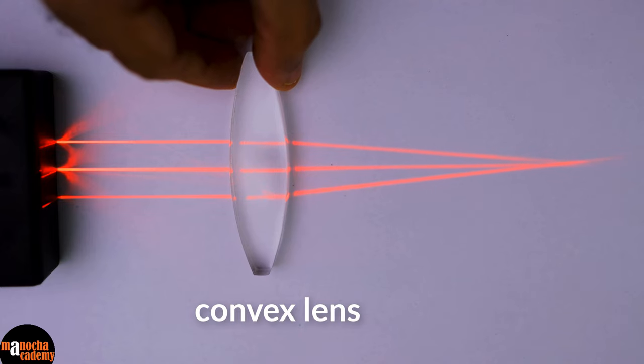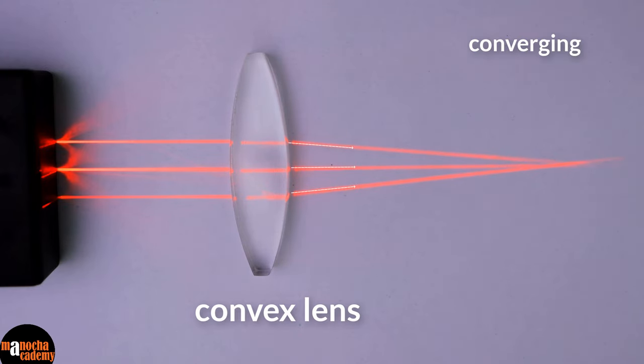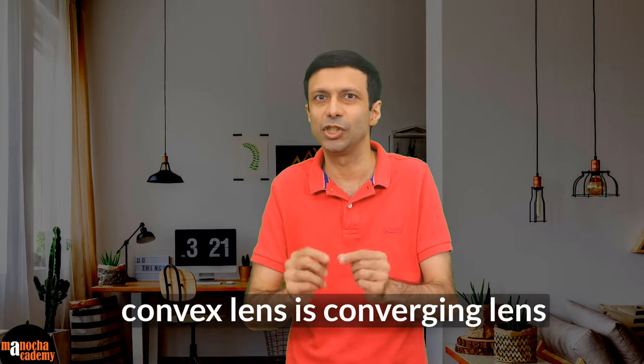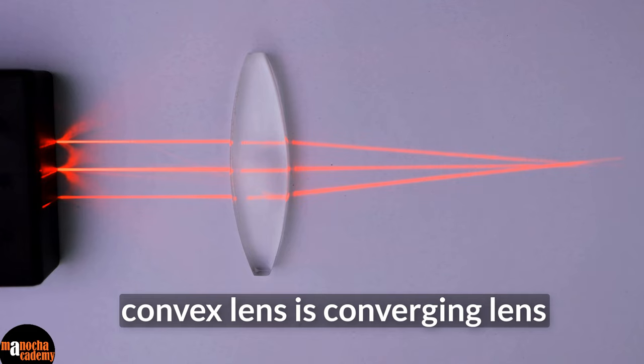Can you see what it does? It is converging the parallel beam of light to a point. This point is called the focus. The convex lens is a converging lens. A convex lens is thick in the center and thin at the edges.